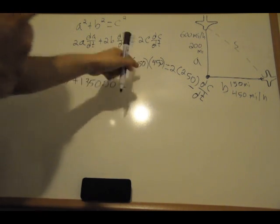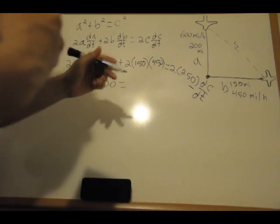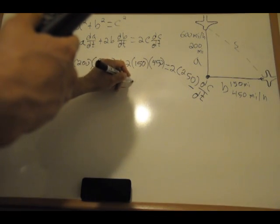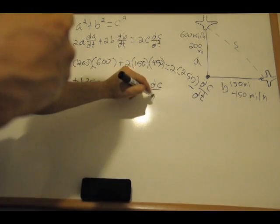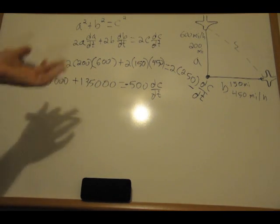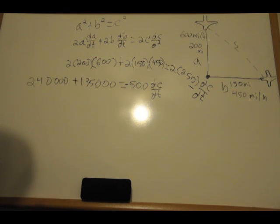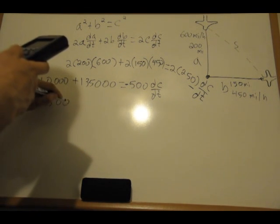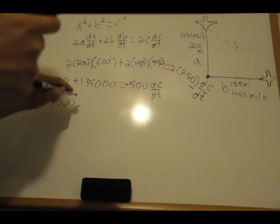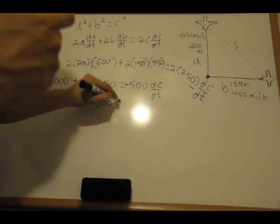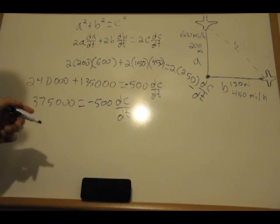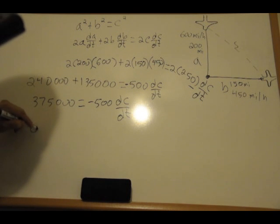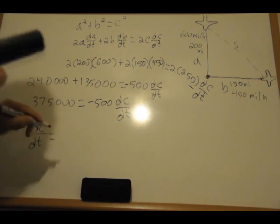Is equal to two times 250, which is 500 dc/dt. Well, minus 500 dc/dt. Now I'll add these up here - 375,000 is equal to minus 500 dc/dt. Now you divide both sides by minus 500 so you can get dc/dt alone.